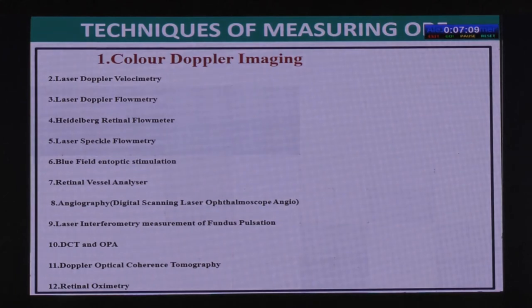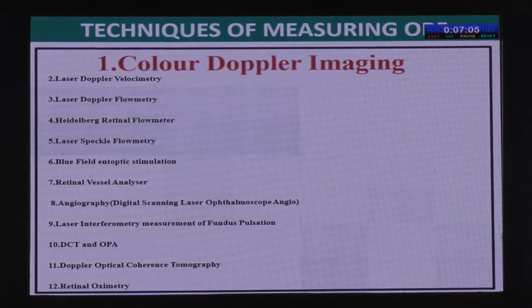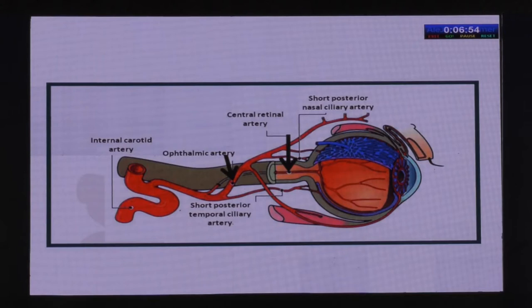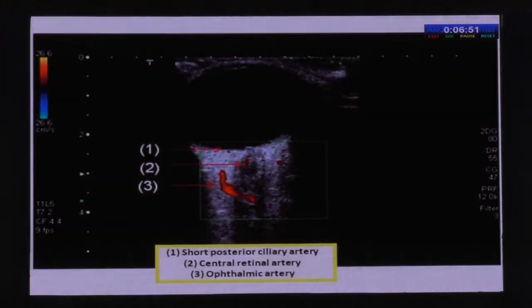There are many instruments to measure ocular blood flow, but color Doppler imaging has emerged as the most important. With it, you can visualize blood flow inside the ophthalmic artery, the central retinal artery, and the short posterior ciliary arteries.